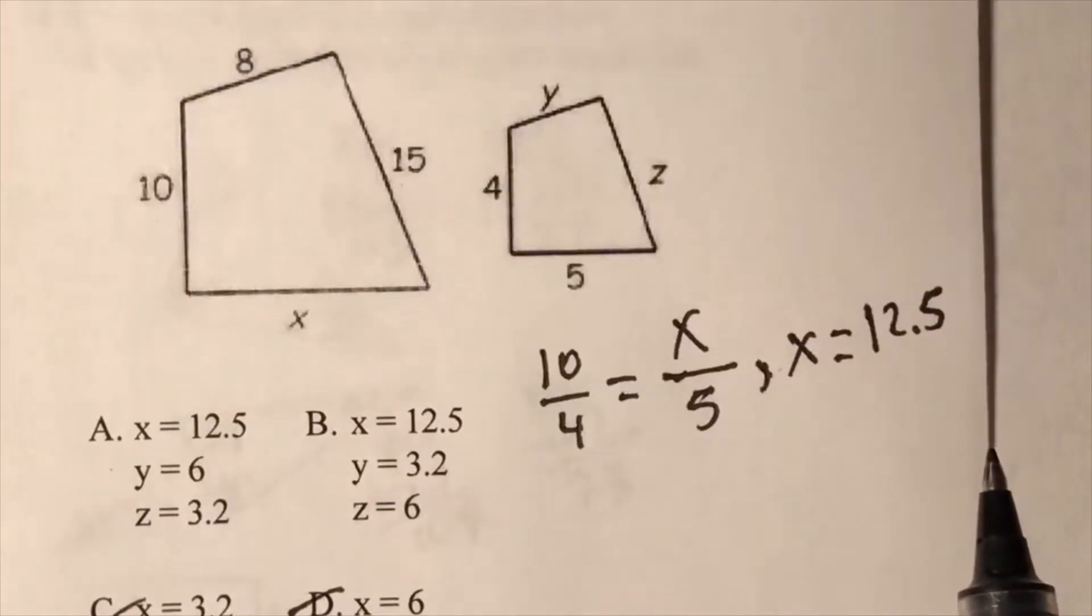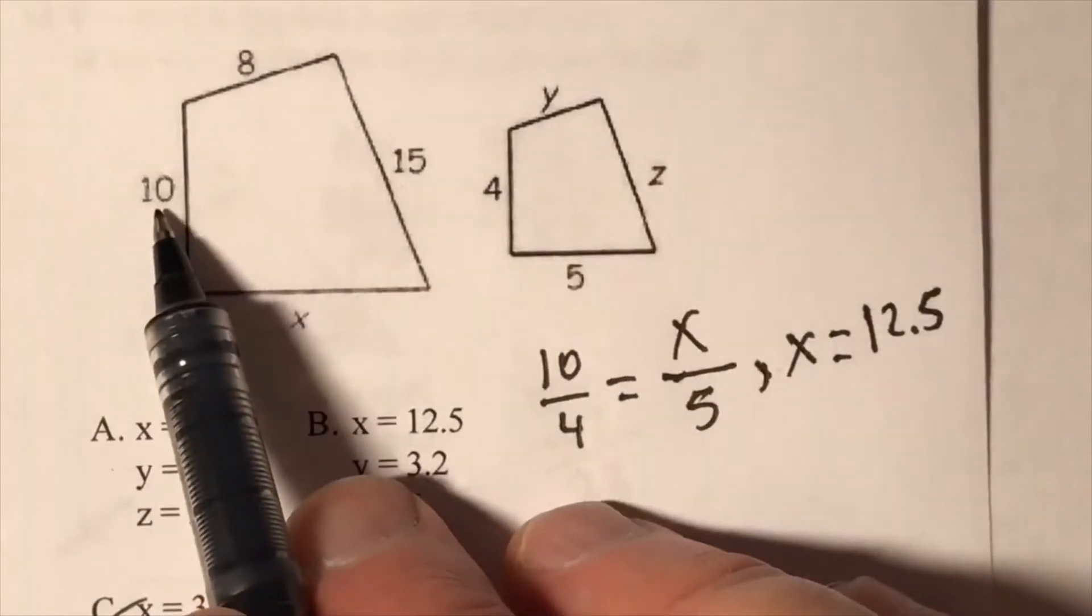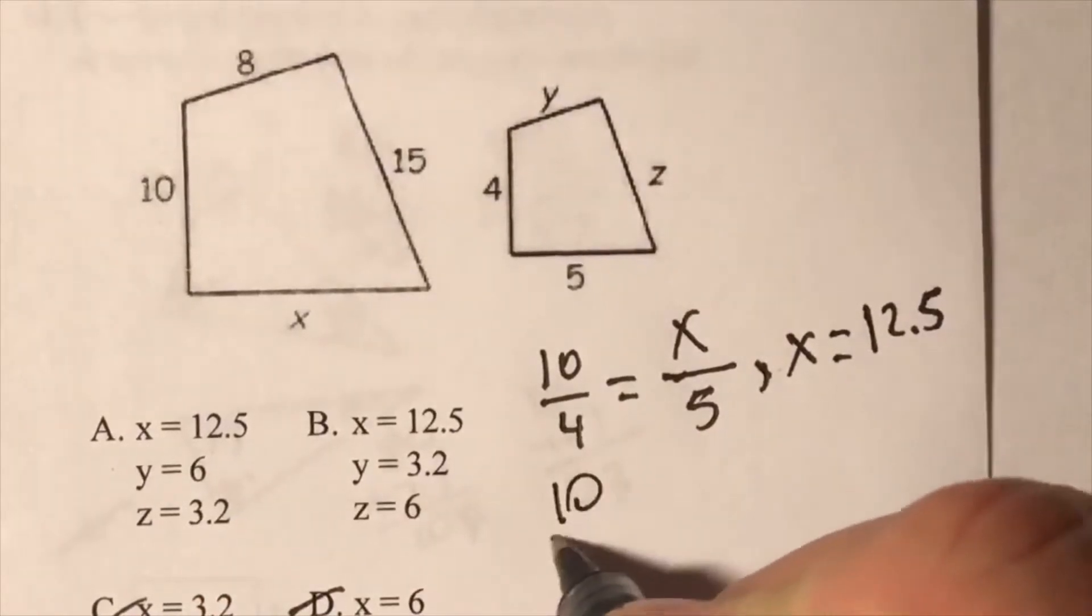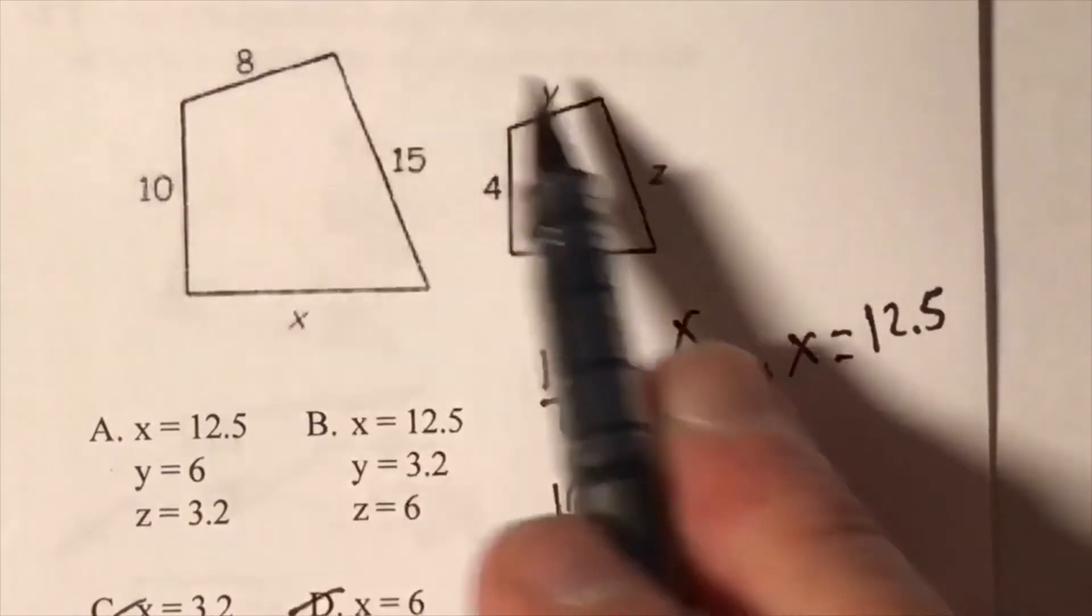So we're down to A and B, so we can just go to the y. We're going to keep the same fraction, 10 over 4, and then pick up the 8 and the y because those are corresponding sides.